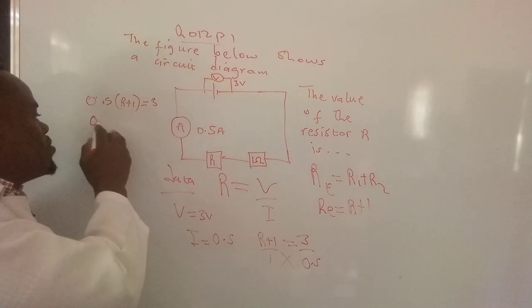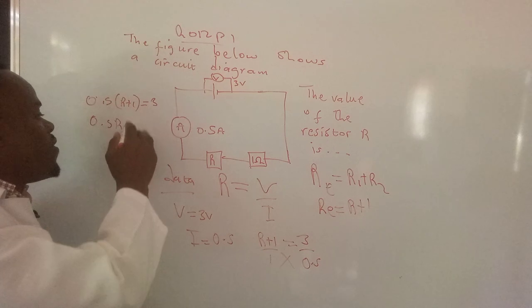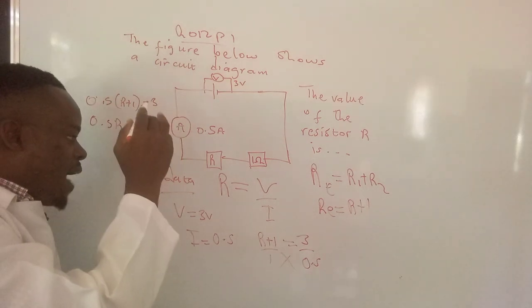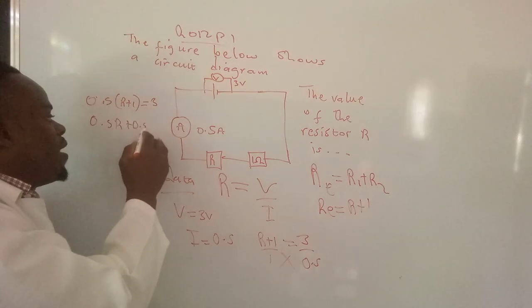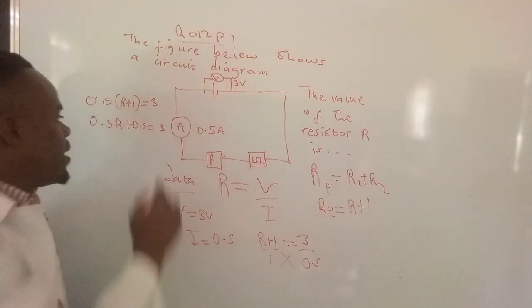So 0.5 times R, we are going to have 0.5R, then plus 0.5 times 1, that's 0.5, which is equal to—and then we have 3 on that side.